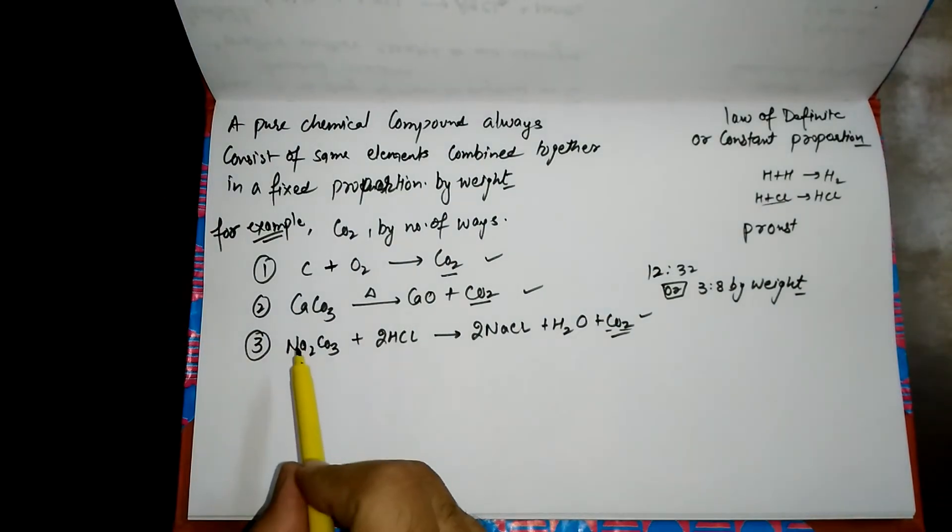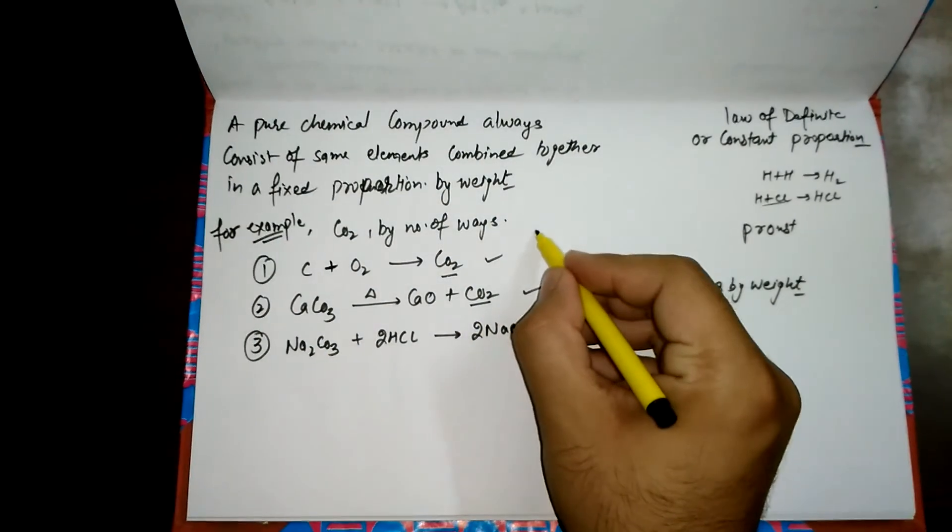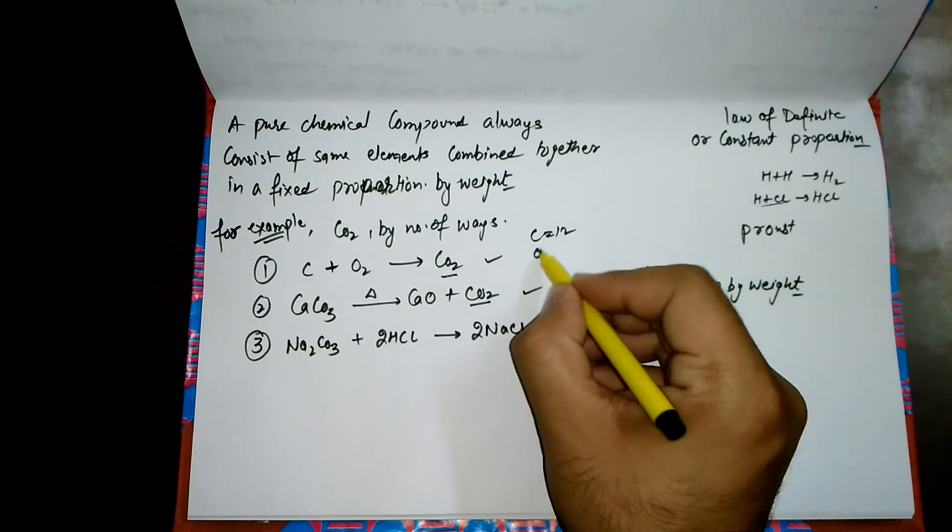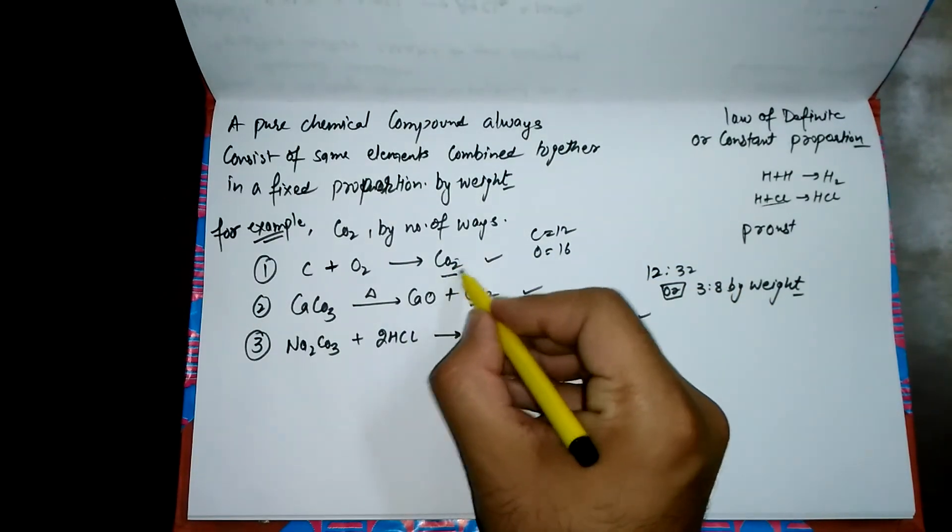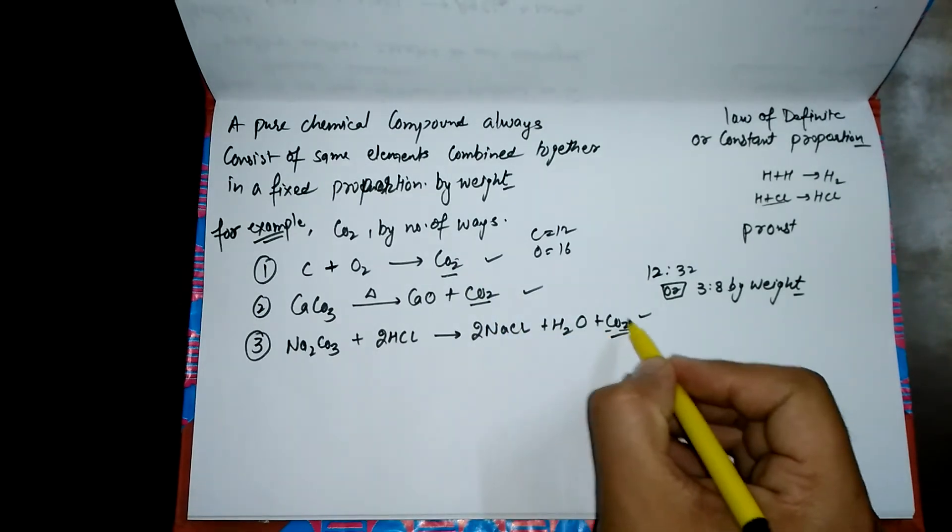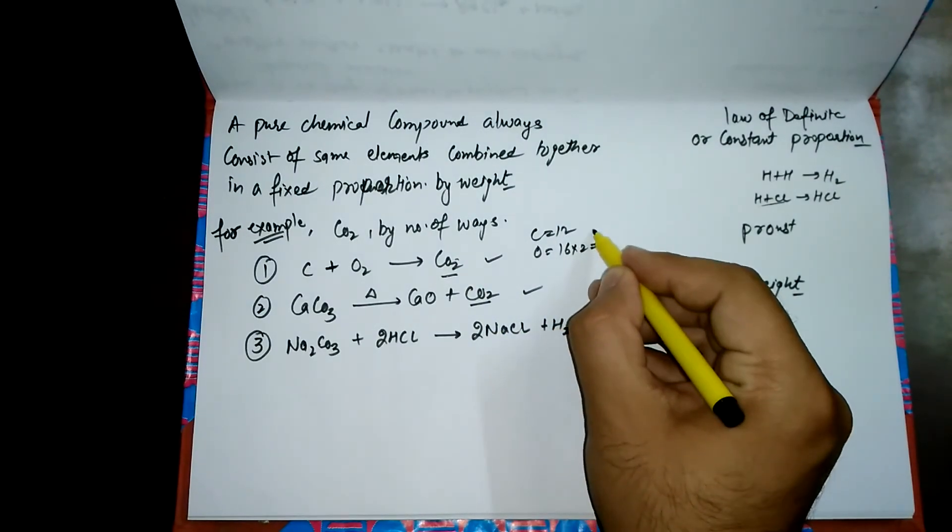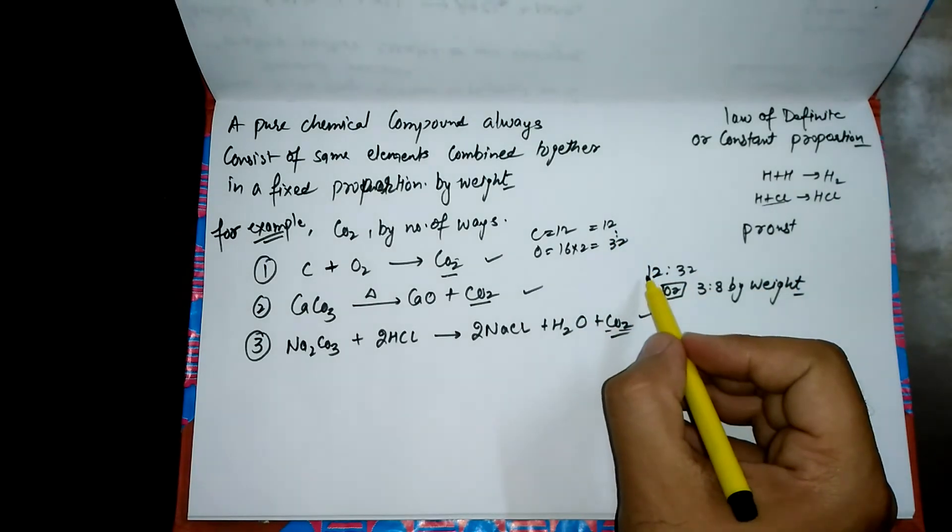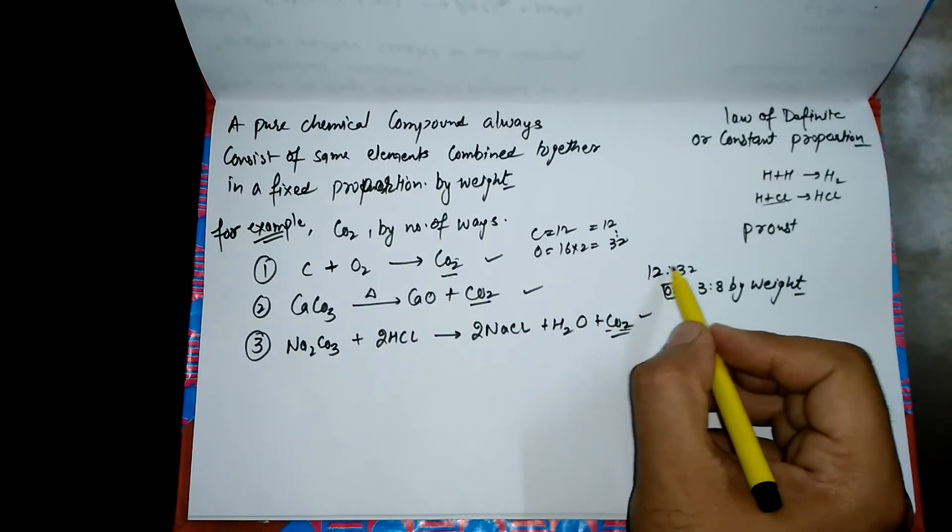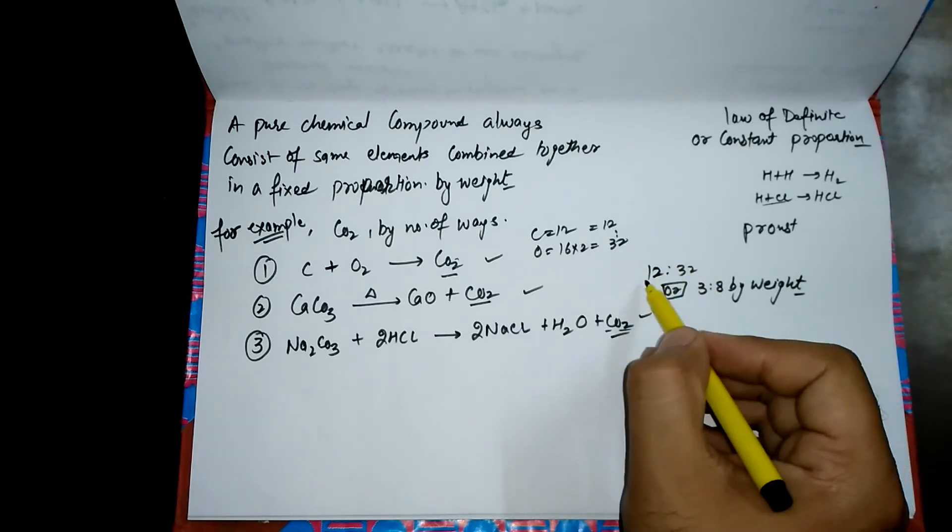In all three samples, carbon is having a mass of 12 and oxygen is having a mass of 16. There are two oxygens, so we multiply by two; overall it becomes 12:32. If we reduce these values to simplest form...